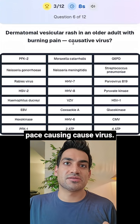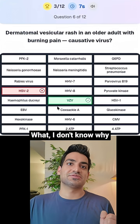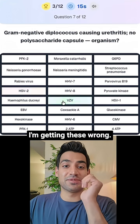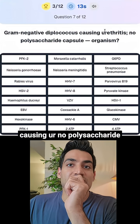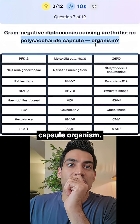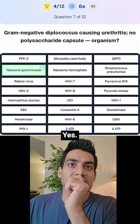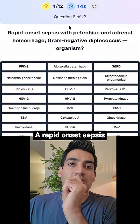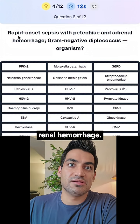Dermatomal VZV rash with burning pain — that's varicella-zoster virus. Gram-negative diplococcus causing urethritis, no polysaccharide capsule — that is Neisseria gonorrhoeae. Rapid onset sepsis with petechiae and adrenal hemorrhage caused by a gram-negative diplococcus.